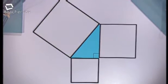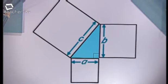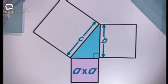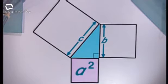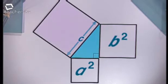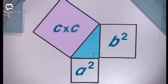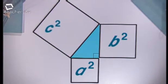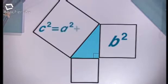If we call the sides A, B, and C, we can convert what you've just seen into a useful formula. The area of this square will be A times A, which is the same as A squared. The area of this square is B times B, which is B squared. And this area is C squared. So the area C squared must equal A squared plus B squared.